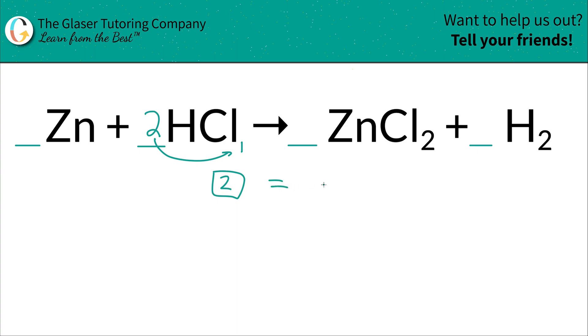And that better equal however many chlorines you have here on the right. You have two chlorines on the right. Remember, if there's no value here, it's assumed to be a one. So one times two is simply two. So actually, this is already balanced. So that's all it is.